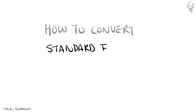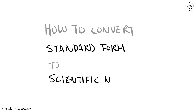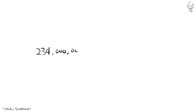Previously, we discussed how to convert scientific notation to standard form. Well, going from standard form to scientific notation is just as easy. Let's say we have a large number, say 234 million, with only the first three digits being significant.